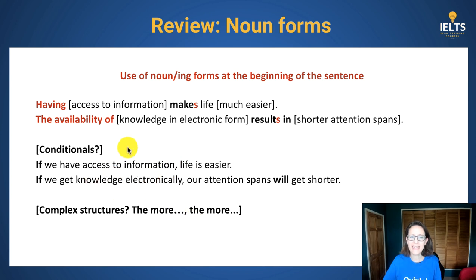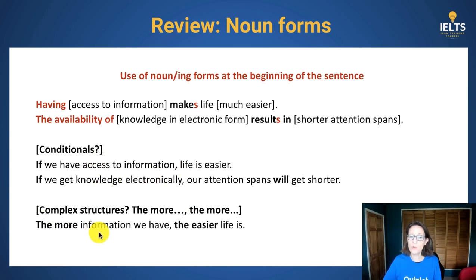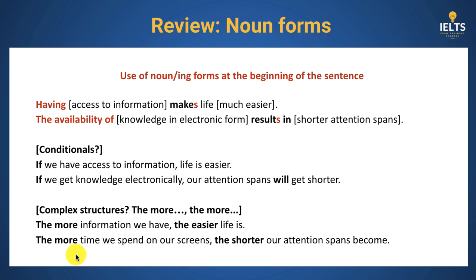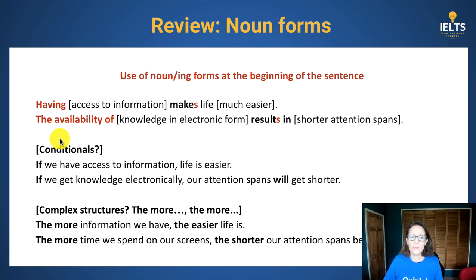Can you again change those? For example, the more information we have, the easier life is — that's a complex structure. The more time we spend on our screens, the shorter our attention spans become. That reviews the use of noun forms at the start of the sentence, and notice that it means you need an -s at the end of the verb.